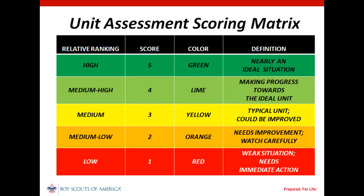To help commissioners in scoring the various elements and sub-elements, we have used simple definitions where appropriate, such as 'Typical unit could be improved' for a 3 or yellow, and 'making progress towards the ideal unit' for a 4, which is in between yellow and green. Although the matrix uses the colors lime and orange for numerical scores of 4 and 2 respectively, some computer users may not be able to tell the difference between lime and green, or orange and red, which is why a numerical score is important.